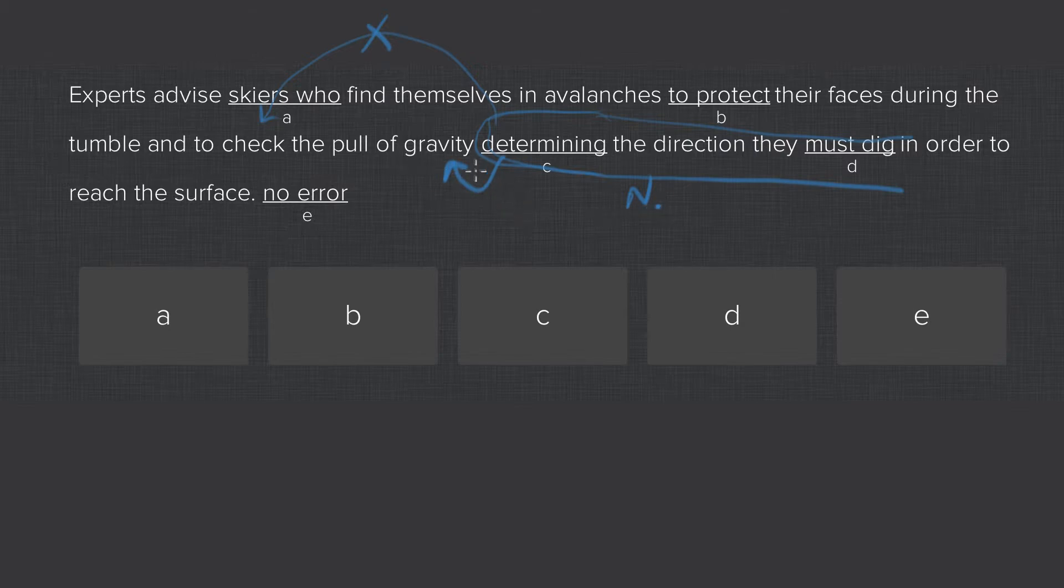Now, if this modifier modifies gravity, it makes it sound as though there are multiple types of gravity. As in, it's like saying, check the gravity determining direction you must dig. Meaning, I have to explain to you which gravity you should be checking, and there's several varieties.